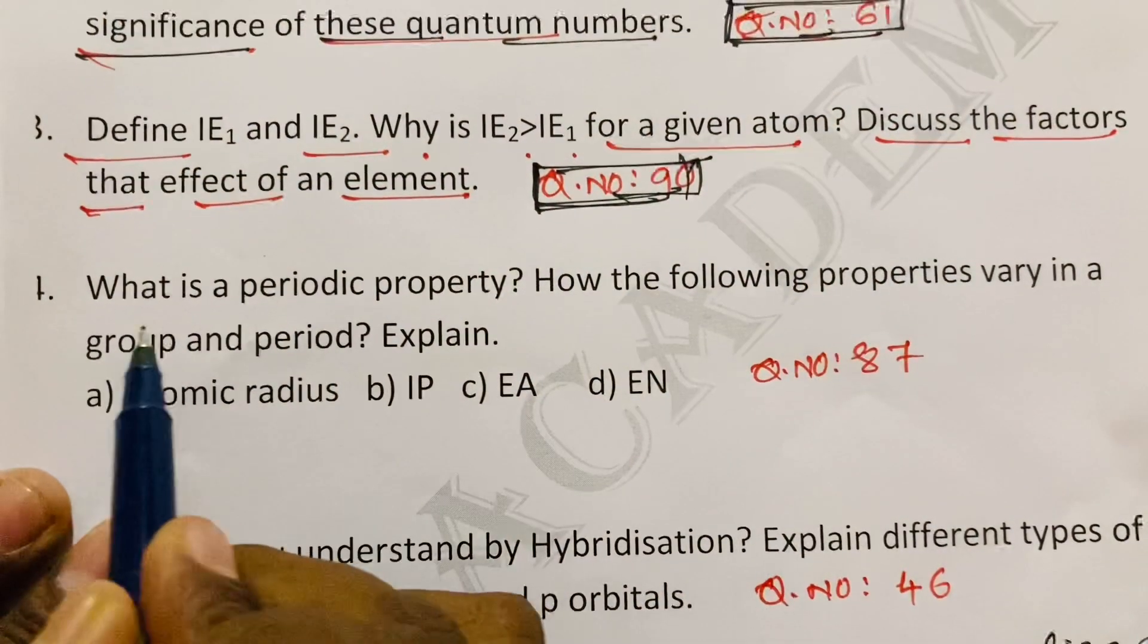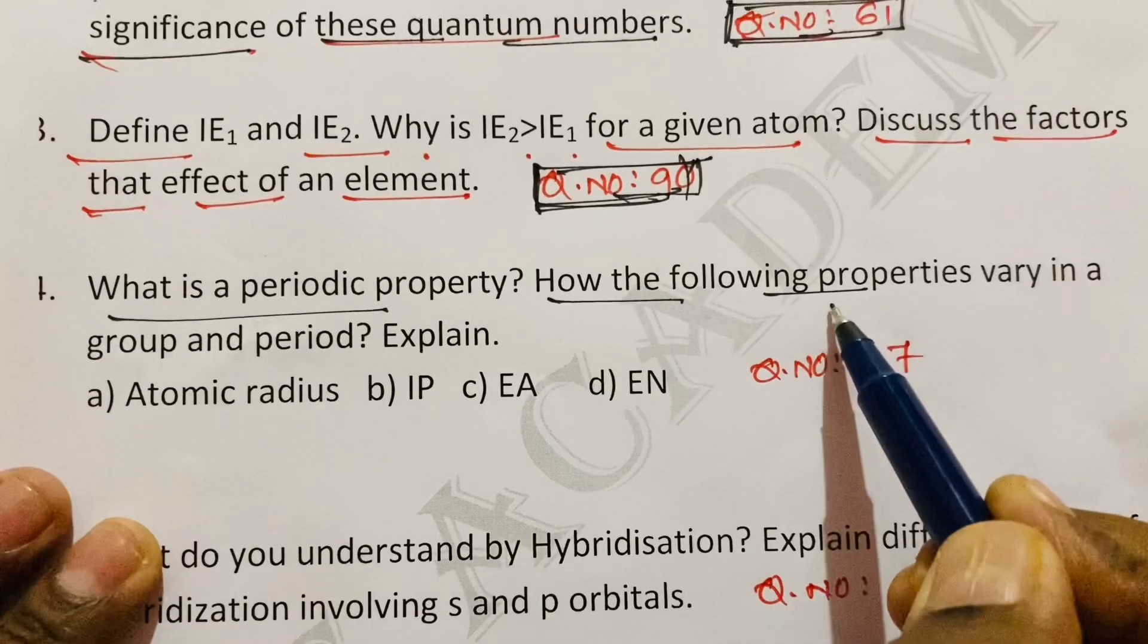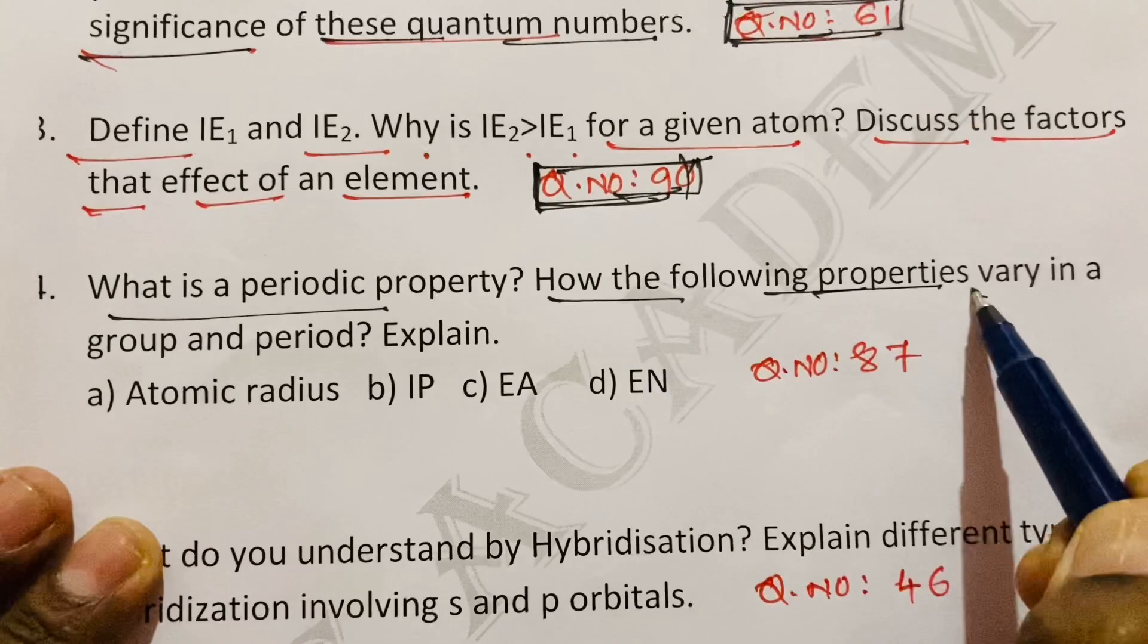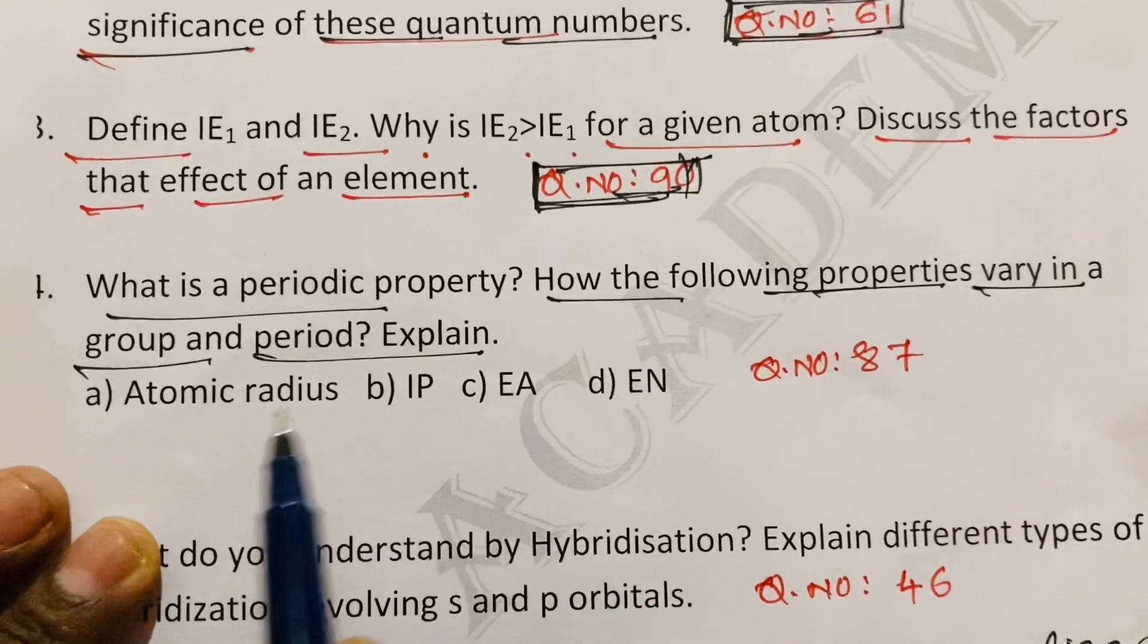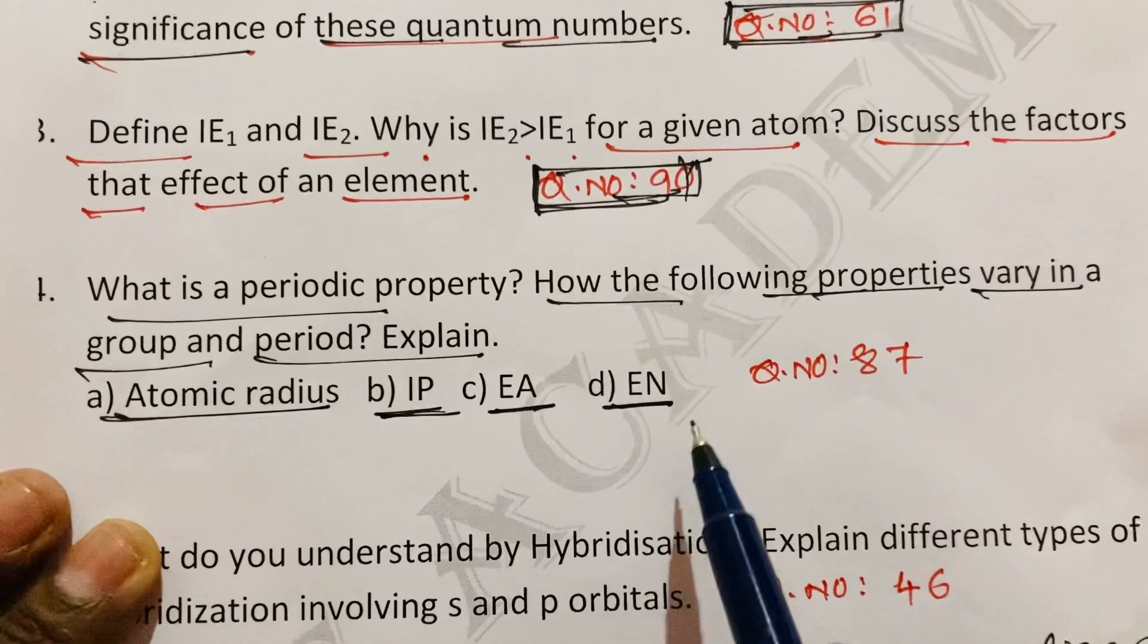What is periodicity? What is periodic property? How the following properties vary in a group and period? Explain. That is atomic radius, ionization potential, electron affinity and electronegativity.